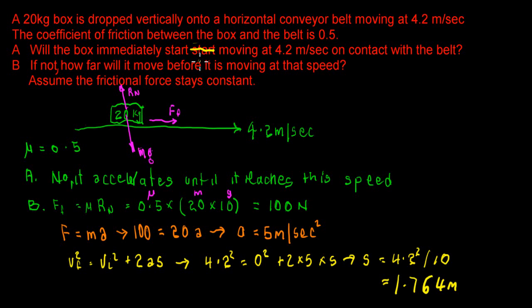Now it's that 100 Newton force that enables the box to accelerate up to the 4.2 metres per second that the belt's running at. So, using our F equals MA, we know that 100 equals 20A. And quite simply, A or the acceleration is 5 metres per second squared. So the box will accelerate at 5 metres per second squared up to the speed of 4.2 metres per second.